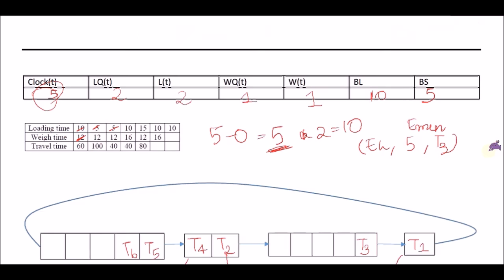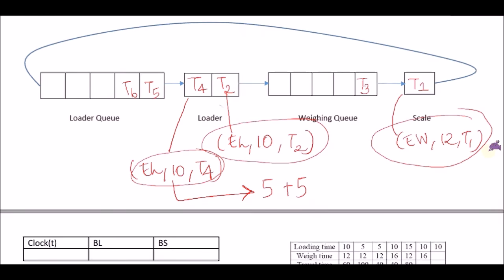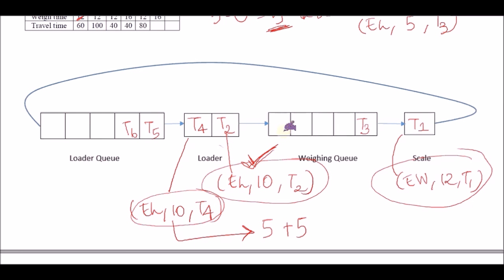Now we choose the next imminent event. The future event list has EW(12, T1), EL(10, T2), and EL(10, T4). The least time is 10, and since EL(10, T2) and EL(10, T4) are tied, we choose one — let's take EL(10, T2) first (alphabetically or by order). So in the next step, our clock advances to 10.